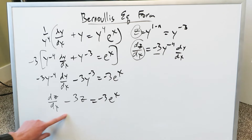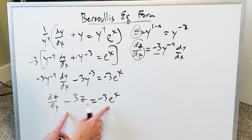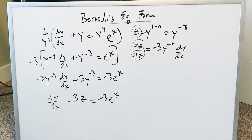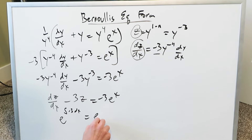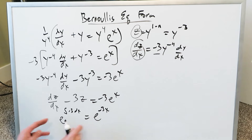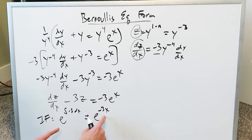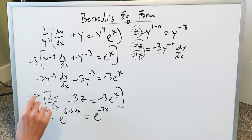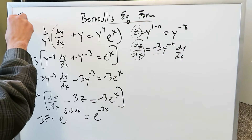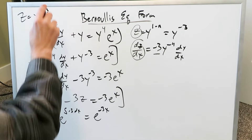Here is your linear form derived: dz over dx plus p times z equals q, with pluses and minuses. Now bring in the integrating factor determination: e to the exponent of the integral of p dx, where p is minus 3, giving e to the exponent minus 3x. Remember, when doing the integrating factor determination, do not include a constant of integration at this step. This e to the minus 3x will now multiply all across, and the final substitution to remember is z equals y to the minus 3.